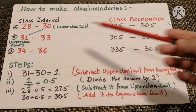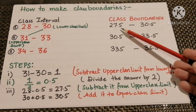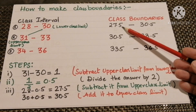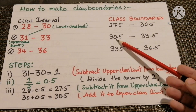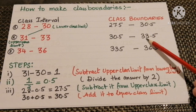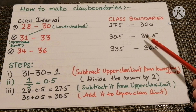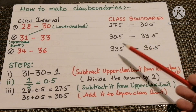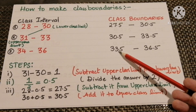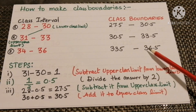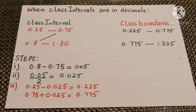For the first interval, the class limit was 28 and 30. By subtracting 0.5 from 28 we get 27.5, and by adding 0.5 to 30 we get 30.5. So the boundaries are 27.5 and 30.5. For the second: 31 minus 0.5 gives 30.5, and 33 plus 0.5 gives 33.5. For the third: 34 minus 0.5 gives 33.5, and 36 plus 0.5 gives 36.5. In this way we have made the class boundaries.